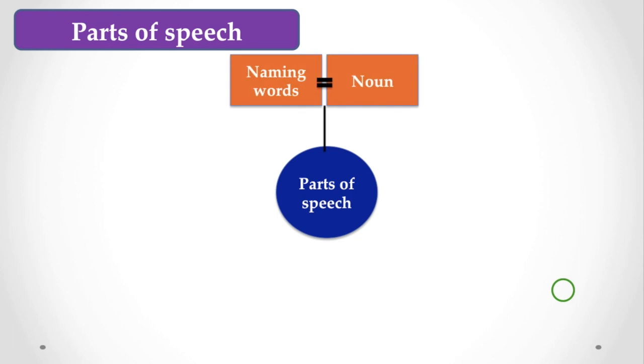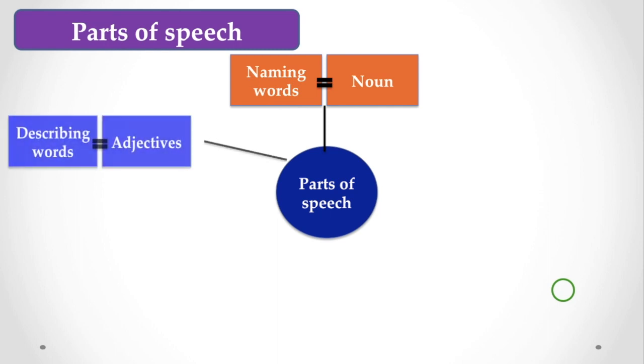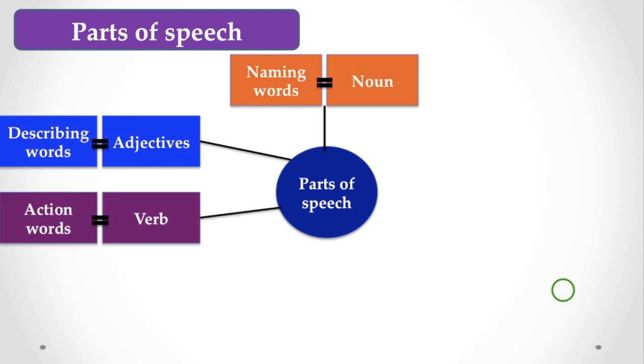These words together are called parts of speech. First, the naming word. Naming word means the noun - noun or naming word that signifies any type of name. Then comes adjective or describing word that describes nouns or pronouns. Verb that refers to any sort of actions like do, I do something, eat, sleep, anything.